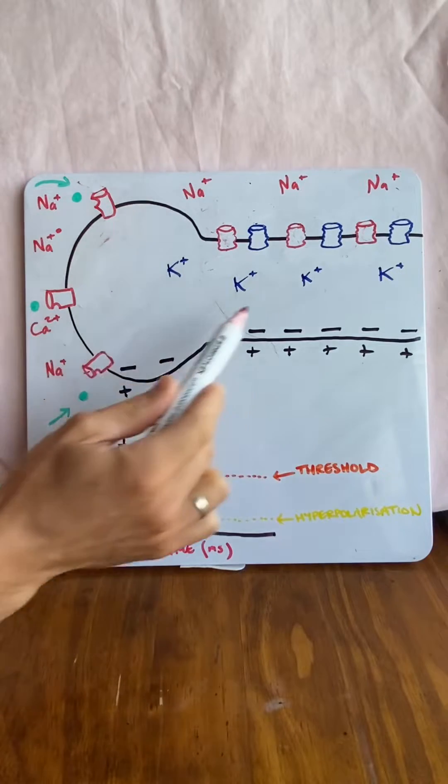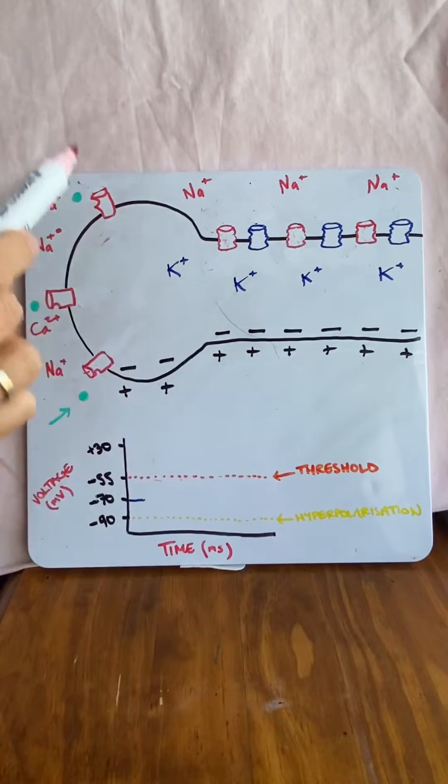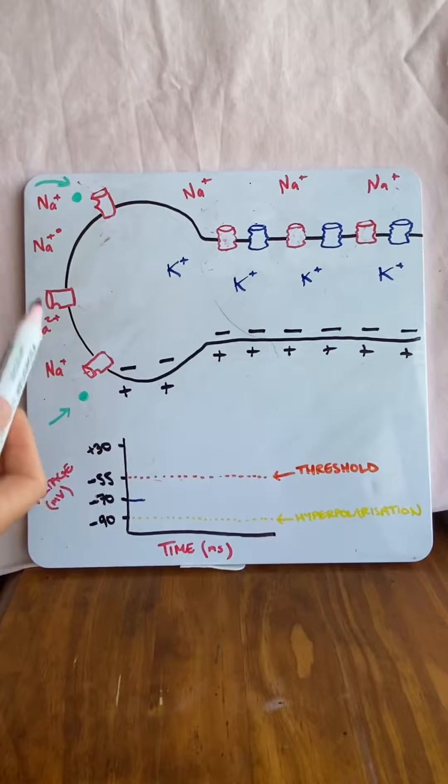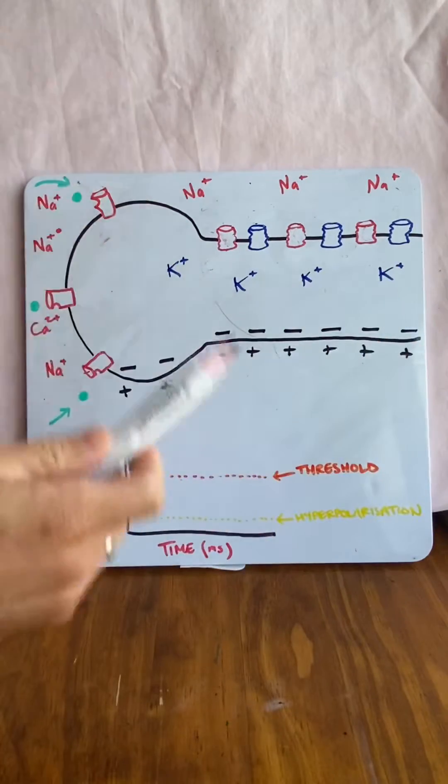First thing you need to be aware of is that a neuron is an excitable tissue. That means it has the capacity to do something. What does it do? It sends a signal, an electrical chemical signal.